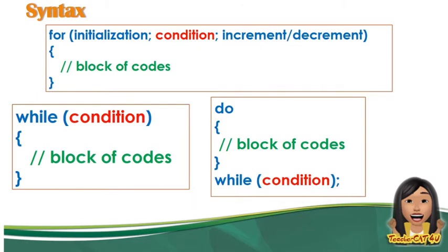Isa sa pagkakaiba ng tatlo ay yung syntax nila. Kung mapapansin ninyo, magkakaiba sila ng syntax, magkakaiba sila ng pattern. Pero, iisa lang ang pinoproduce nilang output. Hindi dahil magkakaiba ng syntax, magkakaiba na rin ang mga produce na output — hindi ganun. Magkakaiba lang sila ng syntax, ibig sabihin magkakaiba lang sila ng pattern, but kaya ng tatlong yun magproduce ng the same output. Silang tatlo ay repetition control statements o yung mga loop statements na pwede ninyong gamitin.